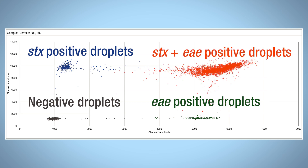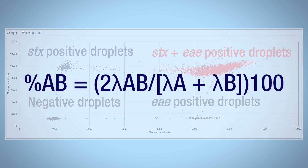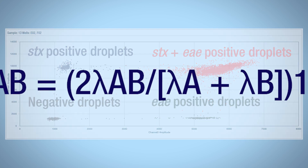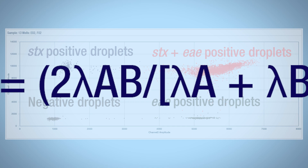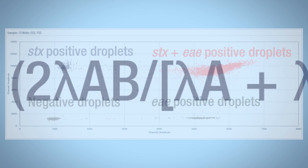The probability of this linkage is calculated to indicate positive linked targets, negative unlinked targets, or the lack of either target.